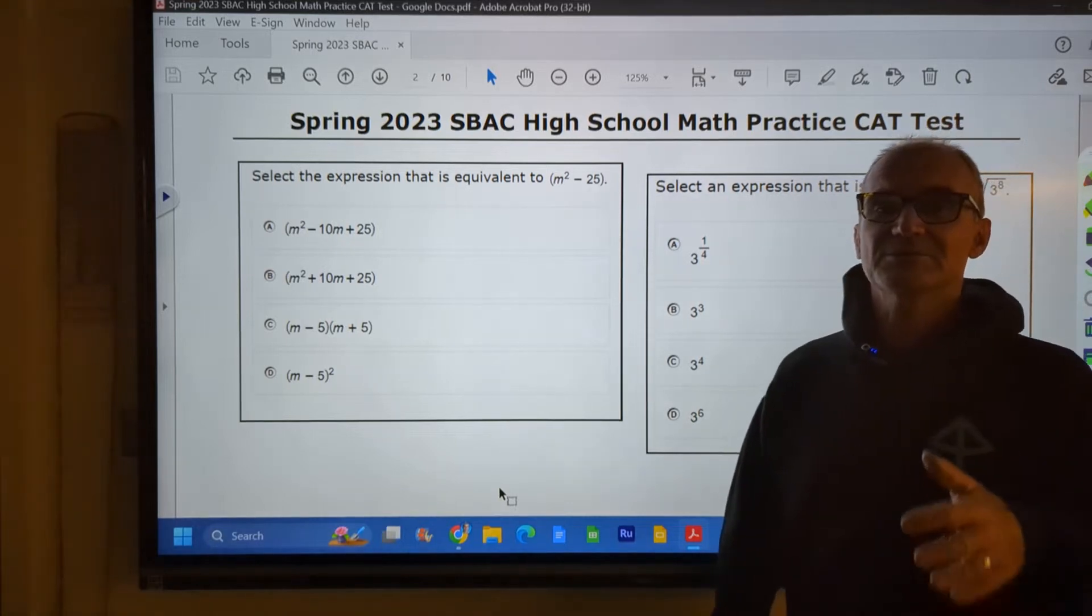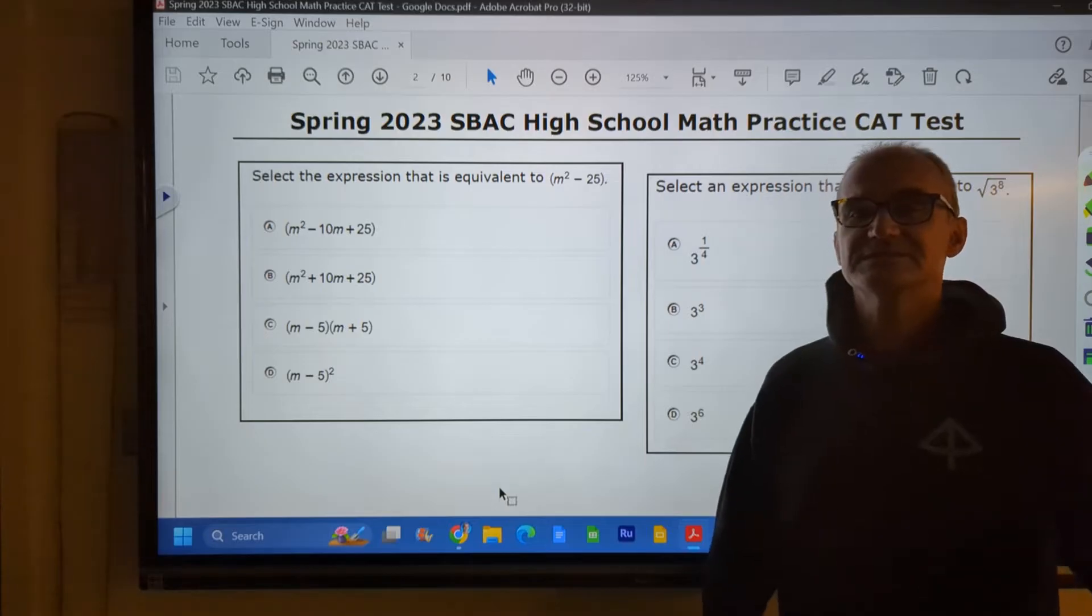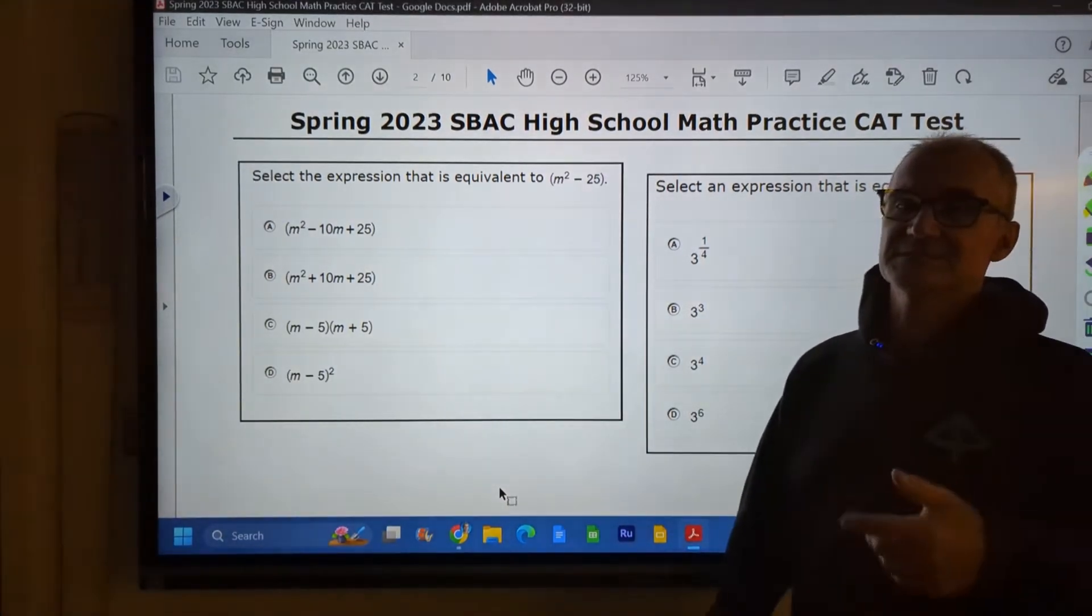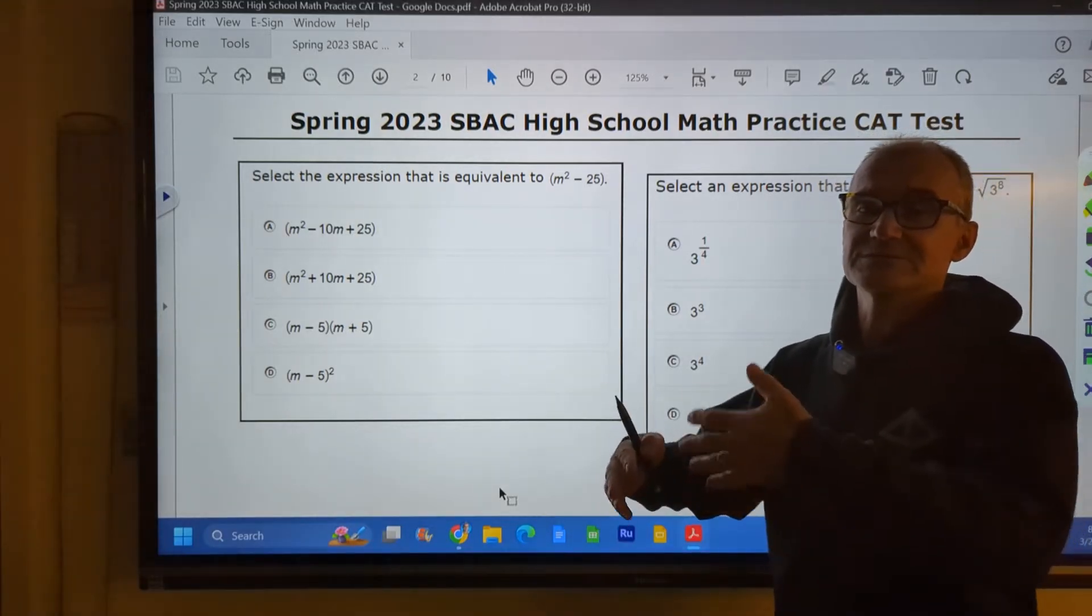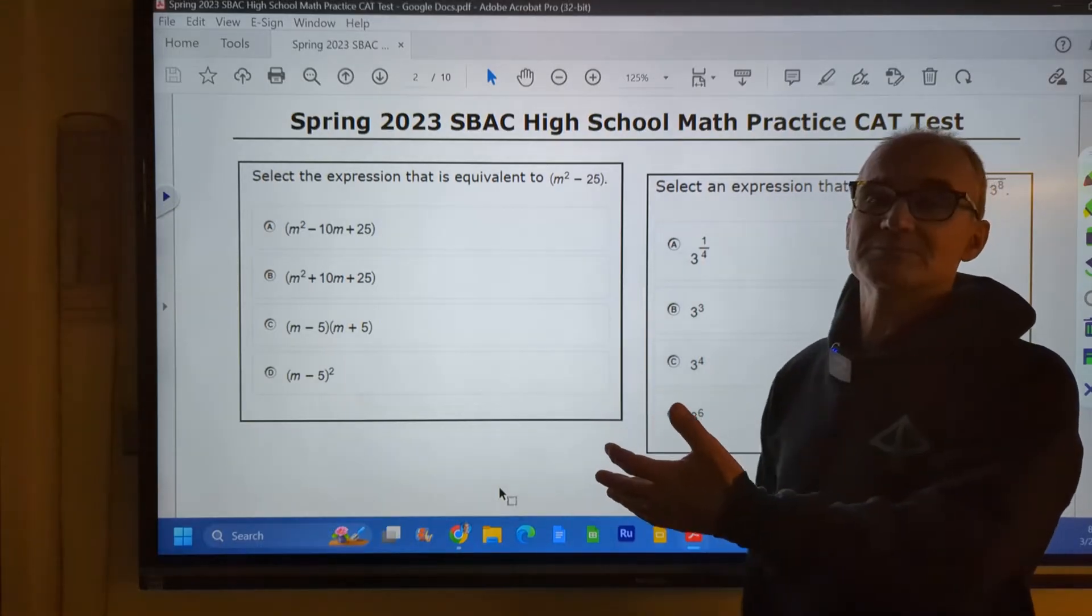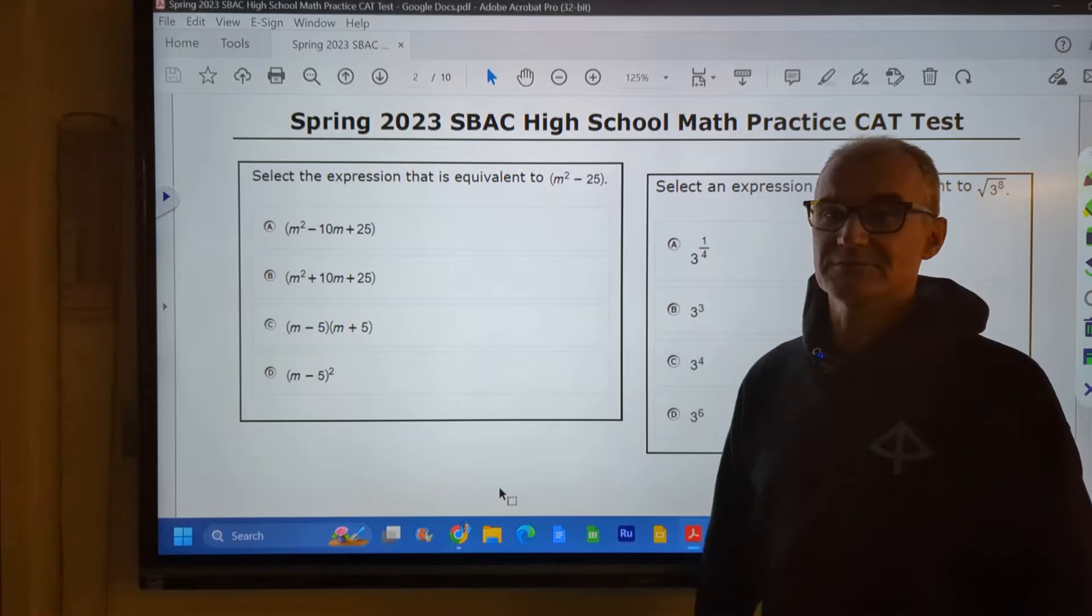The SBAC is a Smarter Balanced Assessment Consortium. It is a standardized math test for about 17 states or so. CAT portion is a California Assessment Test. All right, with that said, let's go ahead and get started. What I would do is have a notebook in front of me and a pencil, pause the video, do the problem before I do it, and then unpause the video and watch how I solve the problem.